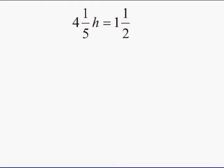In this example, we are trying to solve for h. So when we multiply 4 and 1 fifth by whatever h is, it must equal 1 and 1 half.